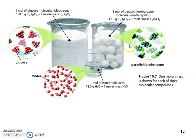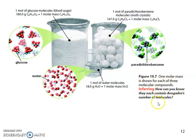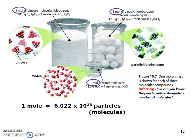Looking at all these compounds, they show how much mass you would have to mass out to get one mole of sugar, one mole of mothballs, and one mole of water. One molar mass is shown for each of these three molecular compounds. How can you know they are each containing Avogadro's number of molecules? Well, if they're all one mole, one mole equals Avogadro's number of particles — and in this case those particles are molecules. There's going to be this relationship between grams and moles and Avogadro's number.